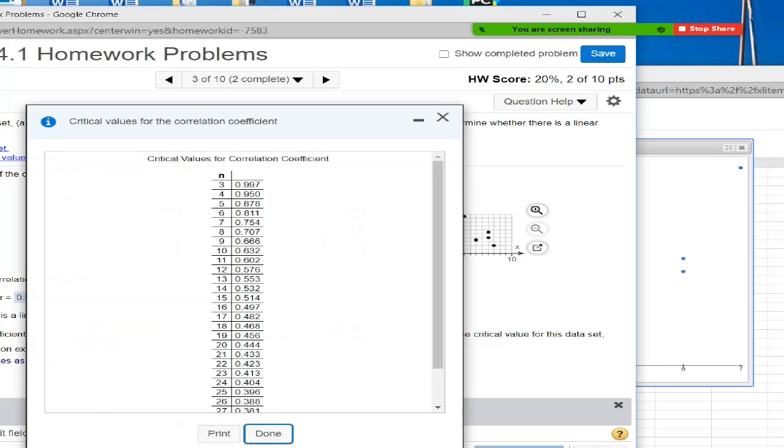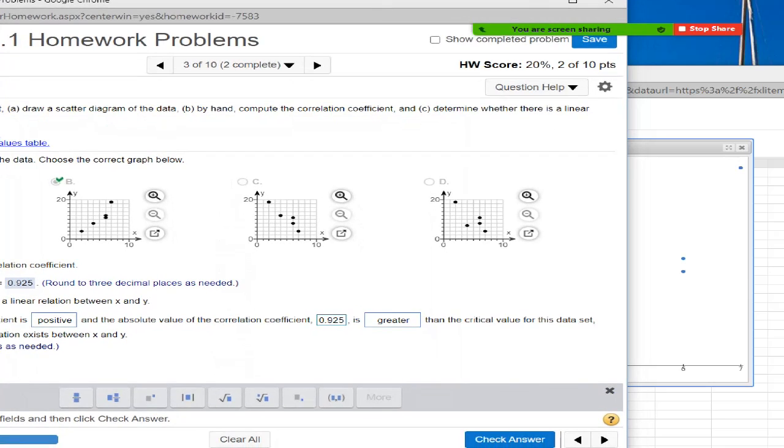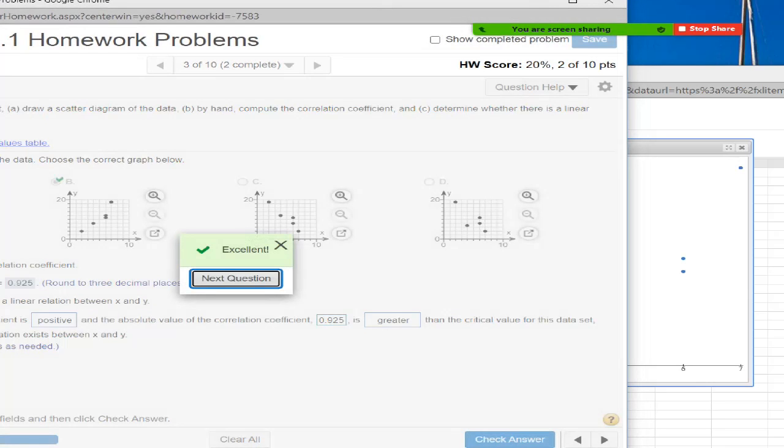N equals 5, 1, 2, 3, 4, 5, 0.878. I think they want me to type 0.878 here. All right, let's give it a shot. And that's how you do some of these. Anyway, scatterplot. We looked at a scatterplot. We looked at calculating the correlation coefficient in StatCrunch. And we looked at interpreting some of these results by comparing it to the critical values.